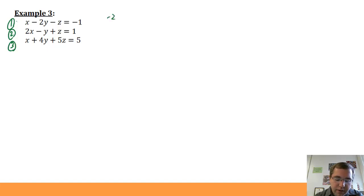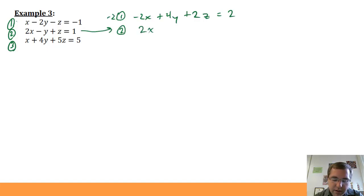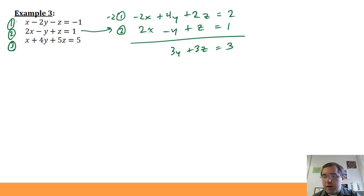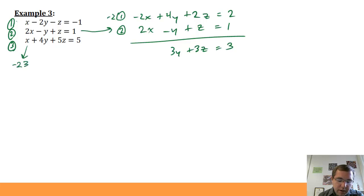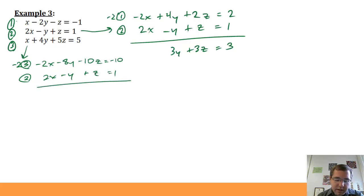I take negative 2 times equation 1, giving negative 2x plus 4y plus 2z equals 2. I chose negative 2 so that when I add it to equation 2, the x's cancel. That gives 3y plus 3z equals 3. Then I take negative 2 times equation 3, giving negative 2x minus 8y minus 10z equals negative 10. Adding equation 2 to that cancels x and gives negative 9y minus 9z equals negative 9.